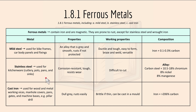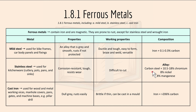Stainless steel is used for kitchenware and similar items. It's corrosion resistant, tough and resists wear. For working properties, it's difficult to cut. It's an alloy as well and contains several elements.